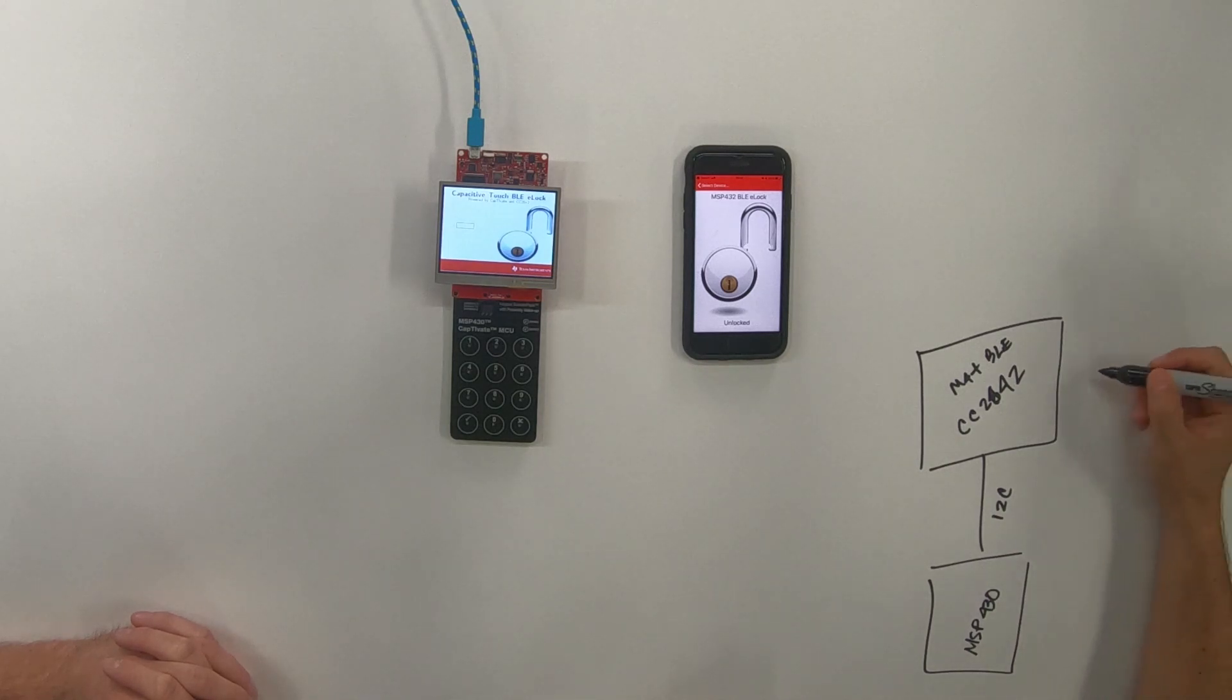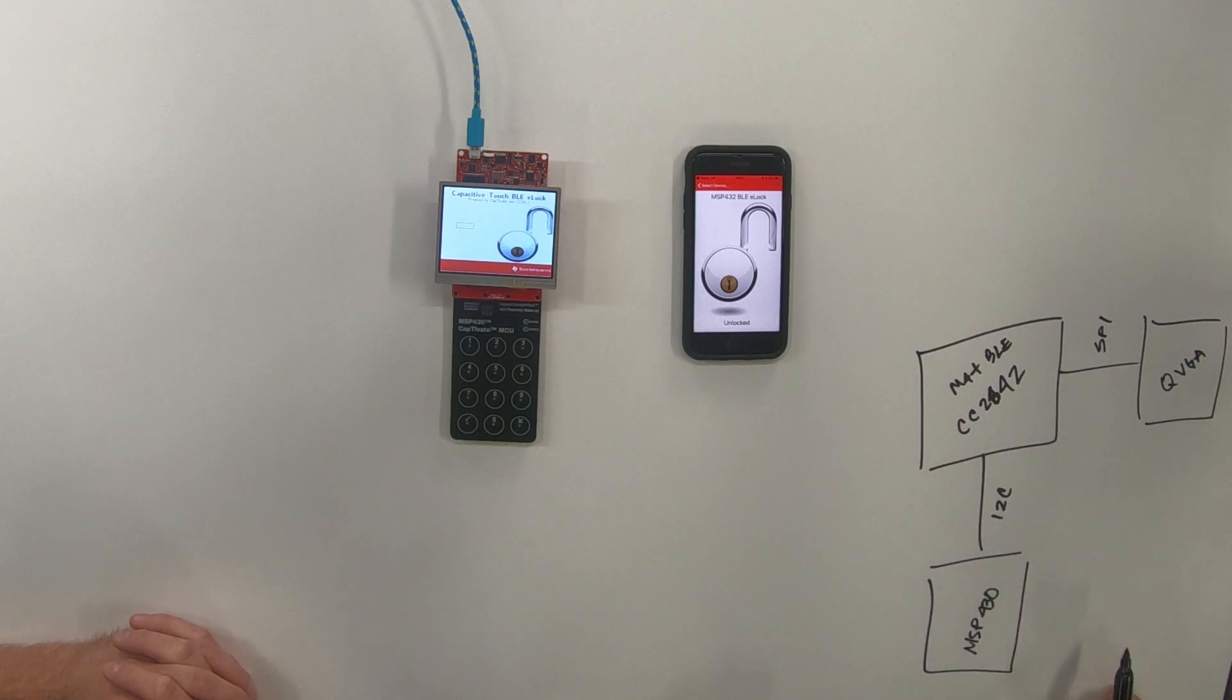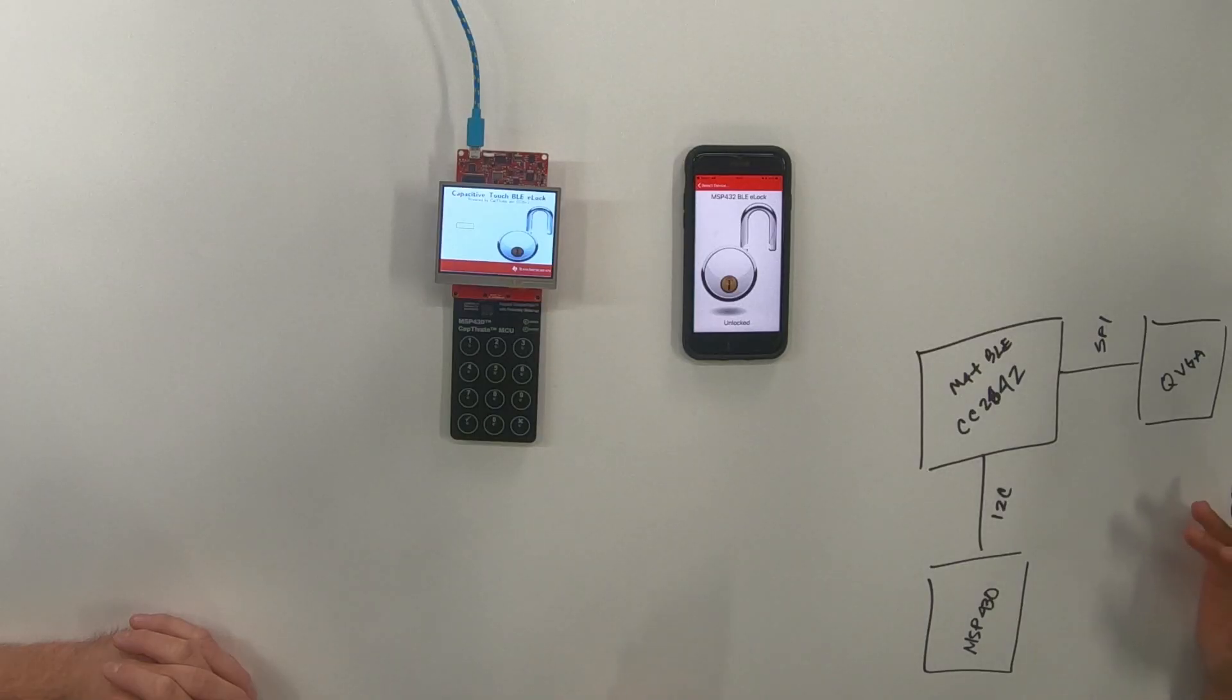Gotcha. And also we have a QVGA display. Another booster pack that is connected to the micro through SPI. And then that's pretty much it. So you get the input from the Captivate device. You process it. You send it over I2C. You can wake up the main micro and then it will change the display on screen. Plus it would even send a message through BLE. Okay.